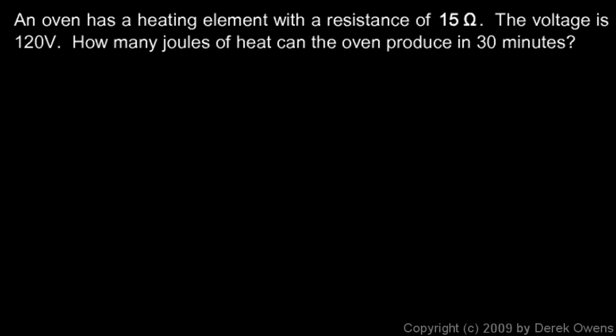In this example problem, we're told that an oven has a heating element with a resistance of 15 ohms. Let's write that down - this is some of our given information: resistance is 15 ohms. And we're told the voltage is 120 volts, that's the standard voltage in a household electrical outlet, at least in the United States.